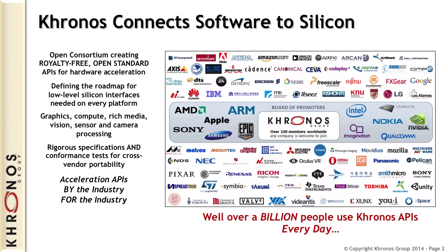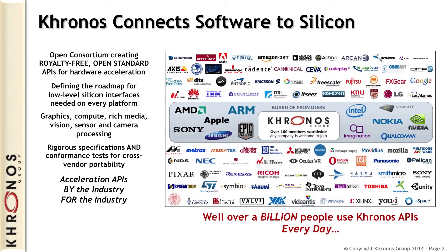We tend to focus on APIs that connect software to silicon — the acceleration APIs — the silicon community coming together to figure out how to expose the good silicon that we're building to application and middleware developers. We develop specs and conformance tests, and it is intended to be the place where the industry comes to build the standards that we need to build our business.